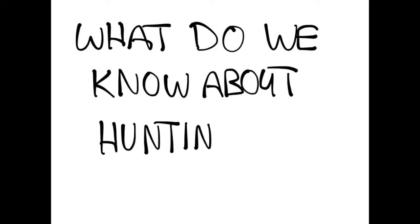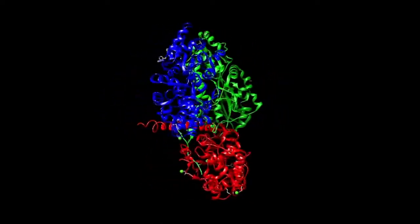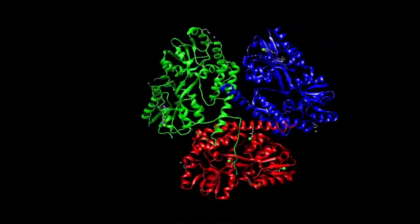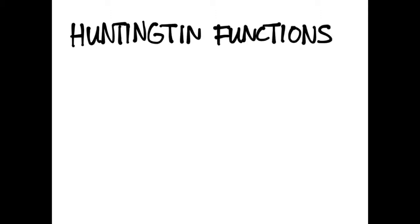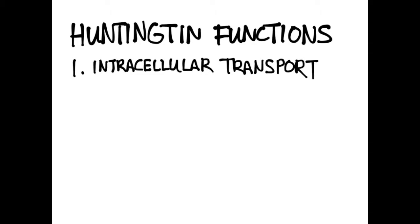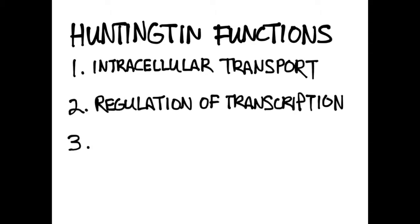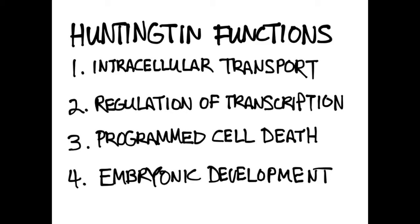So what do we know about Huntington? Most of what we know regarding the function of Huntington has been derived from an analysis of its structure and genetic sequence. It is hypothesized that Huntington is normally involved with four main functions: intracellular transport, the regulation of transcription, programmed cell death, and embryonic development.